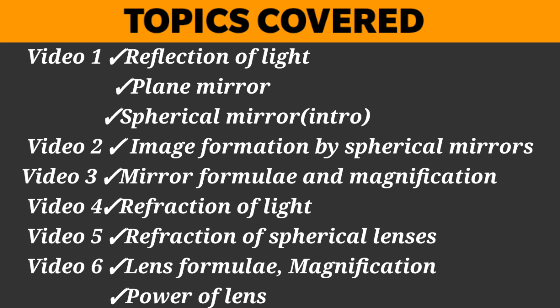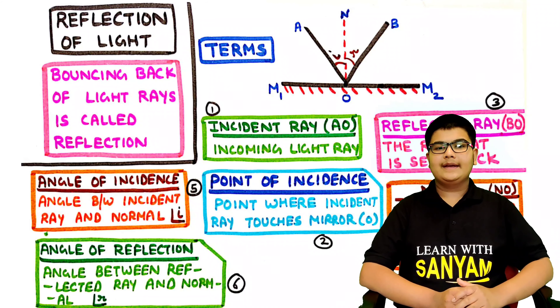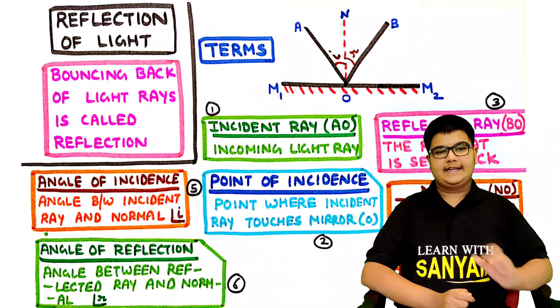I have divided this chapter into six parts. In the fourth lecture, we shall discuss refraction of light. In the fifth lecture, we shall continue with refraction and discuss refraction of light by spherical lenses in the form of ray diagrams. Finally, in the sixth lecture, we shall discuss lens formula, magnification and power of lens. So sit back and enjoy. Now let's start with the first topic, that is reflection of light.